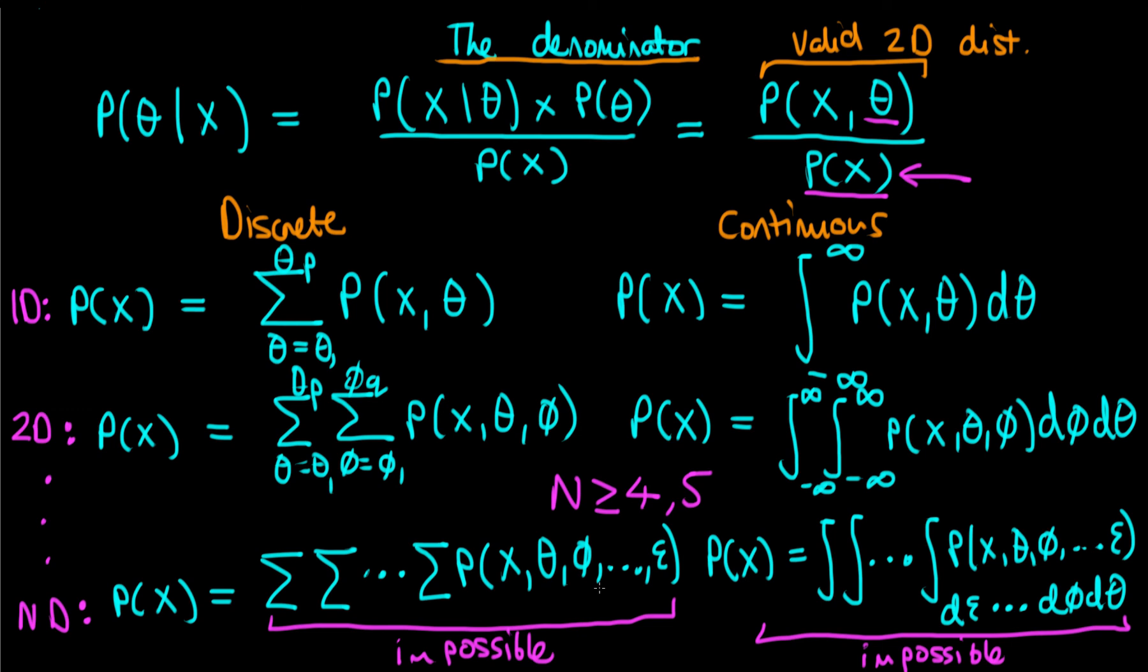So what do we learn from this? We learned that if we have a problem of modest difficulty, by difficulty I mean the number of parameters in our model, then it's going to be very difficult, likely impossible, to actually work out the denominator term. This partly motivates why in Bayesian inference we choose to instead use sampling to sample from the posterior distribution rather than trying to exactly calculate it. But I'll discuss that in future videos.